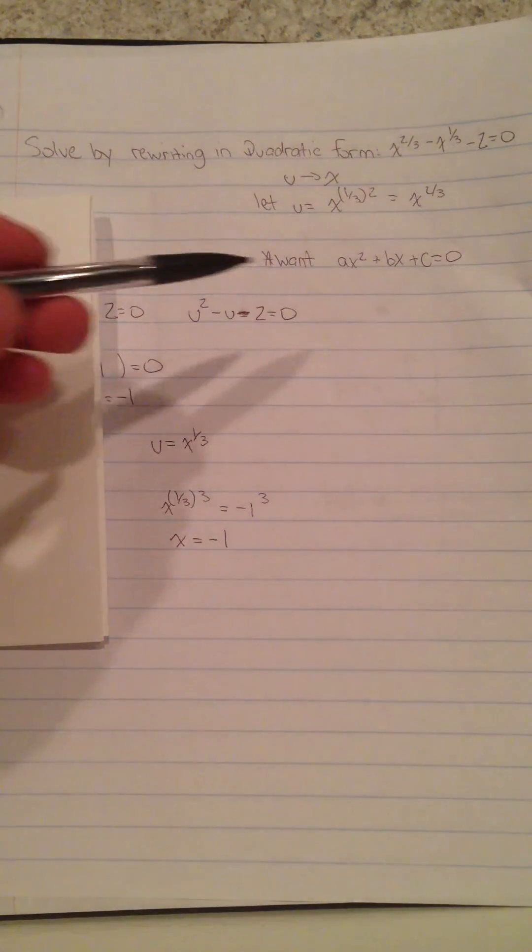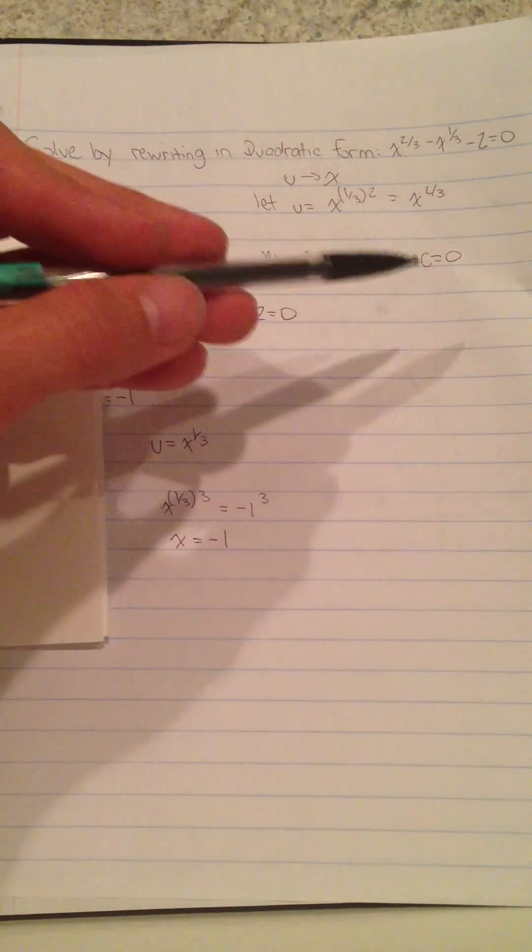Today, we're going to solve by rewriting a quadratic form: x^(2/3) - x^(1/3) - 2 = 0. We can see it's not in the regular form of ax² + bx + c.